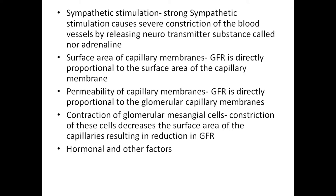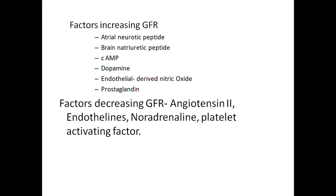Contraction of glomerular mesangial cells — constriction of these cells decreases the surface area of capillaries, resulting in reduction of glomerular filtration rate. Hormonal and other factors increasing GFR include atrial natriuretic peptide, brain natriuretic peptide, cAMP, dopamine, endothelial-derived nitric oxide, and prostaglandin. Factors decreasing GFR are angiotensin-2, endothelins, and noradrenaline.